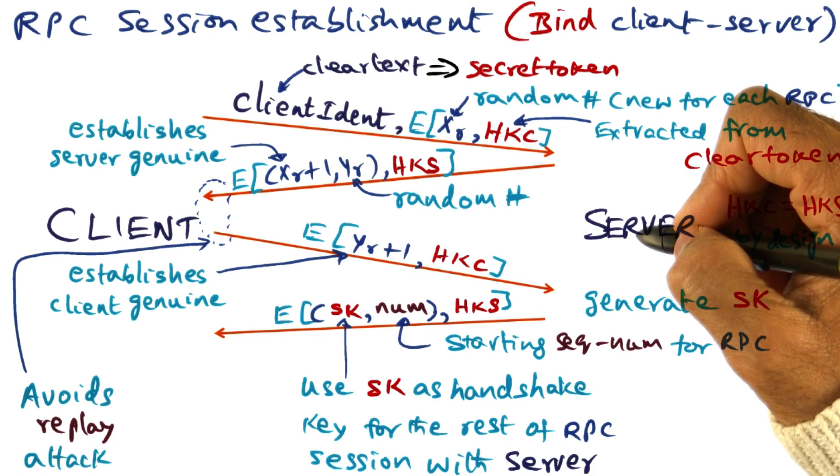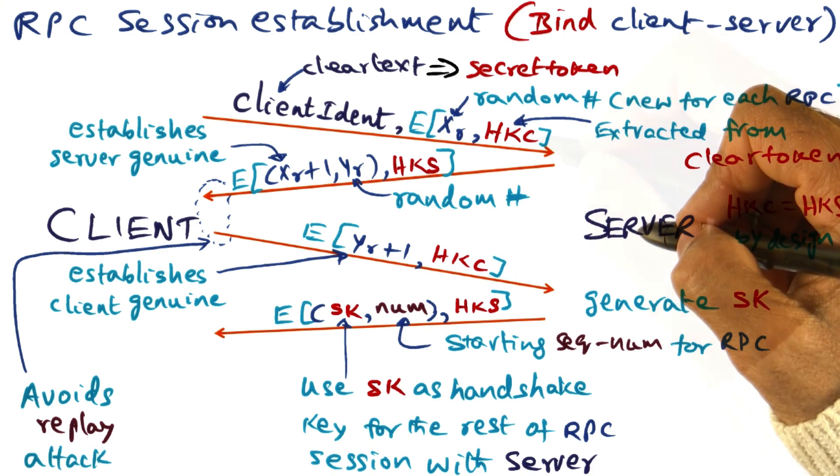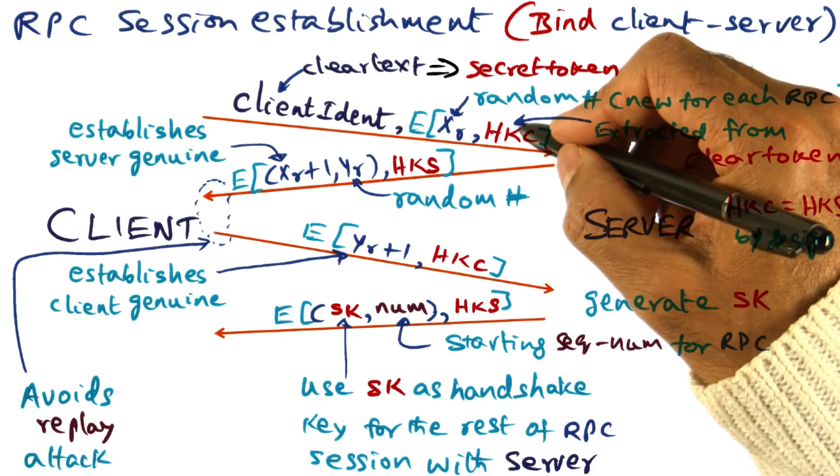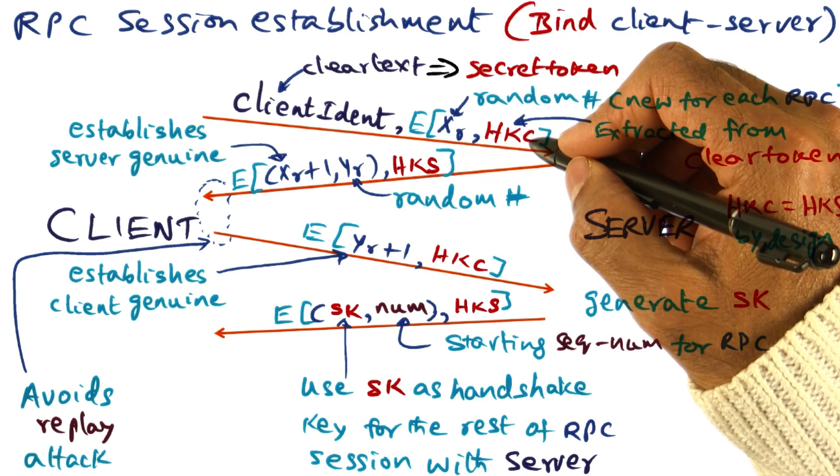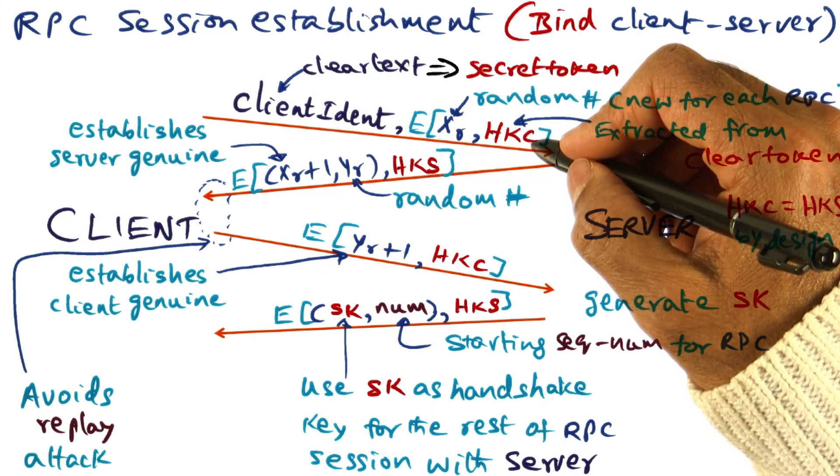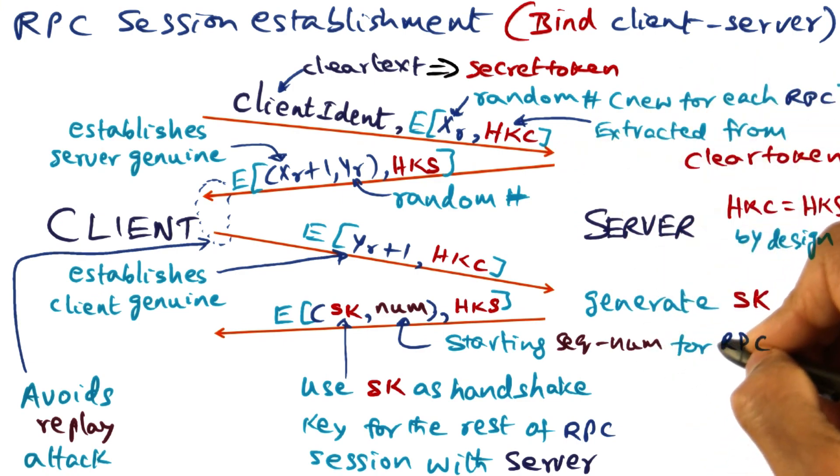And once the genuineness of the client and the server has been established, the server says, for this particular RPC session, we will not use this handshake key anymore for the rest of the communication that we want to do for file system operations. I will generate a new session key, SK.